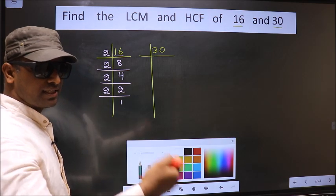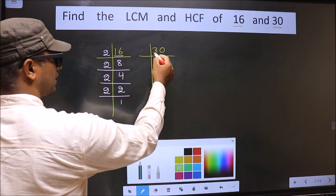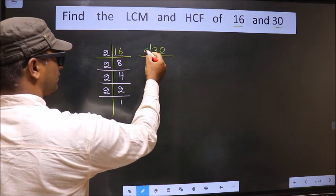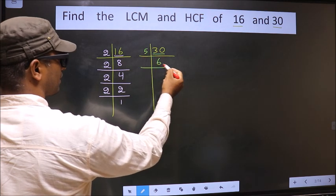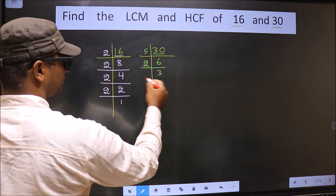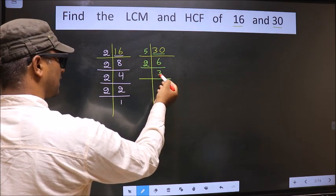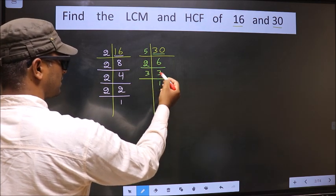Now the other number is 30. 30 is 5, 6, 30. 6 is 2, 3, 6. Now we have 3, 3 is the prime number. So 3, 1 is 3.